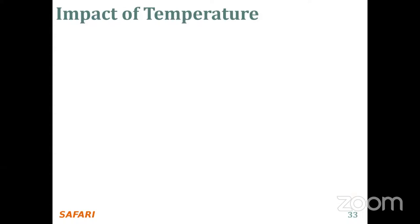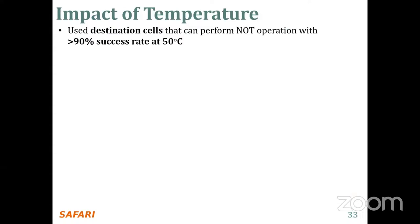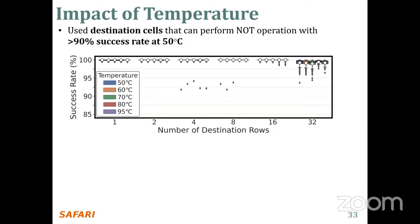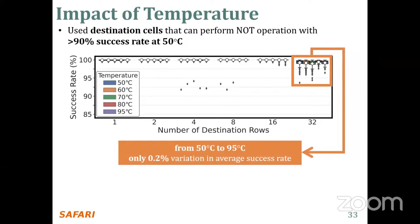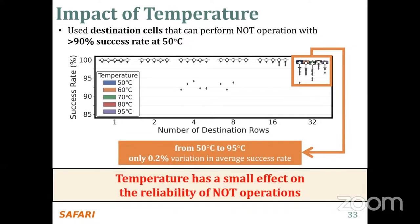Our next experiment examines the impact of temperature on the reliability of the NOT operation. We use destination cells that can perform the NOT operation with more than 90% success rate at 50°C. The x-axis shows the number of destination rows, the y-axis shows the success rate distribution, and the hue shows the temperature — tested at five levels: 50, 60, 70, 80, and 95 degrees Celsius. We observe that when performing the NOT operation with 32 destination rows, there is only 0.2% variation in average success rate when temperature increases from 50°C to 95°C. We conclude that temperature has a small effect on the reliability of NOT operations.